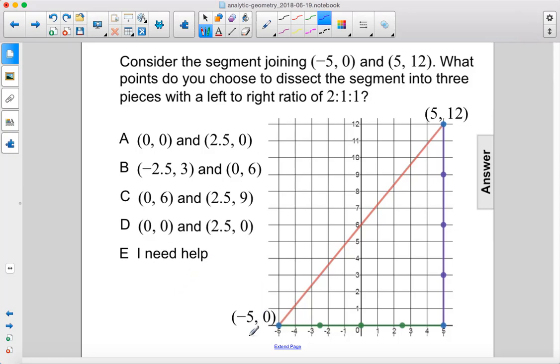Consider the segment joining negative 5 comma 0 and 5 comma 12. What points do you choose to dissect the segment into three pieces with a left to right ratio of 2 to 1 to 1?